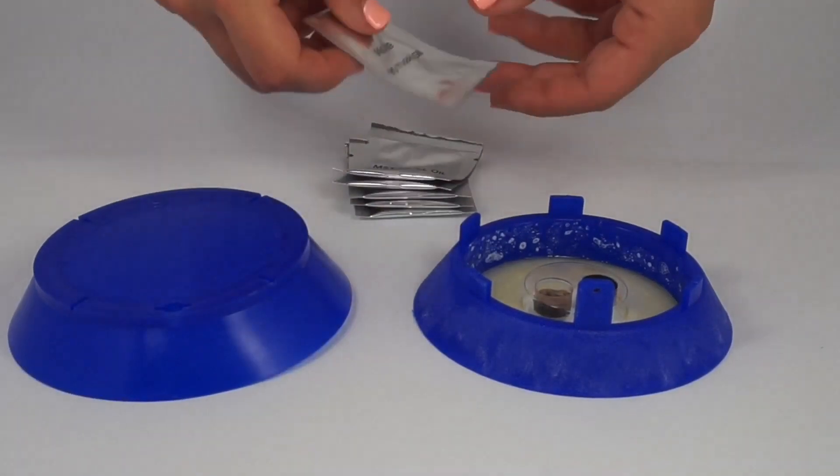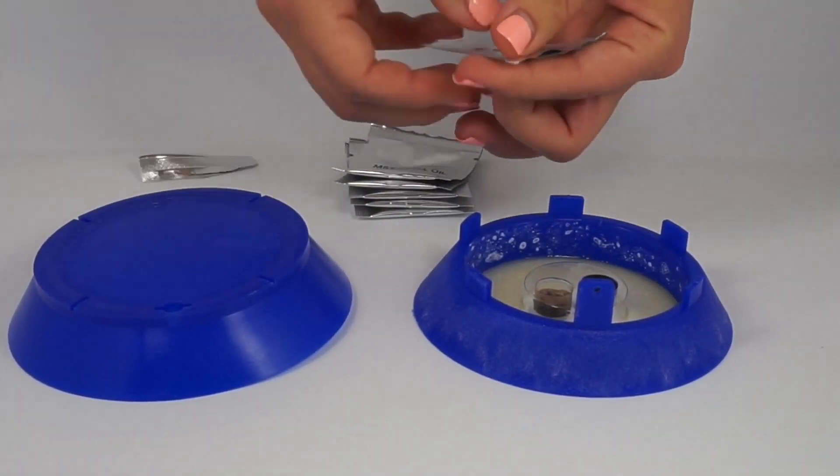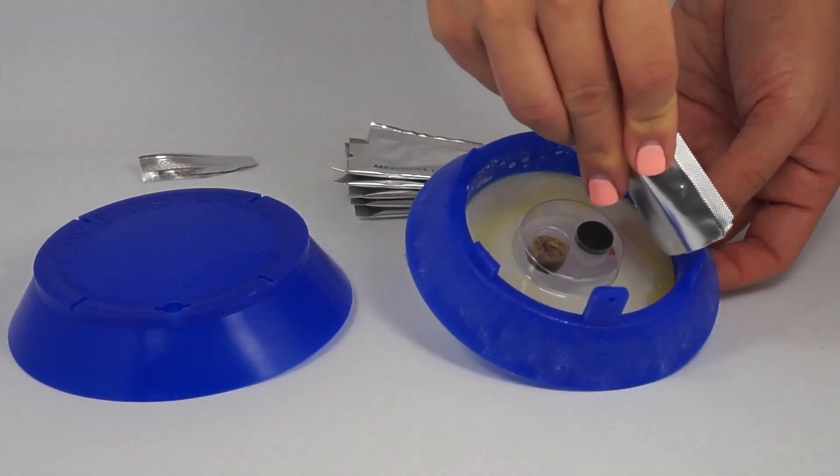To use the oil, simply tear the sachet and pour it into the outer reservoir of the refill cartridge and away from the middle of the cartridge where the pheromone is located.